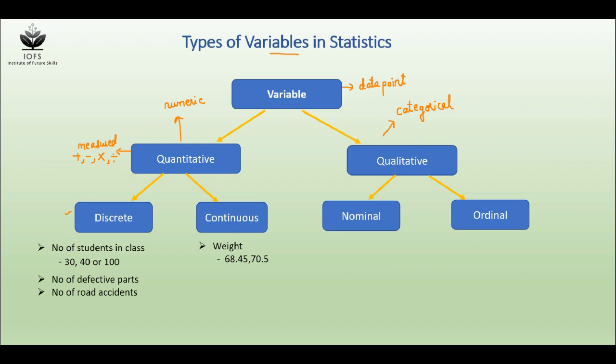Examples would be weight. You can have weight as 68.45 kg, 68.456 or 70.5. Other examples would be height, distance, and temperature because these variables have decimal values.